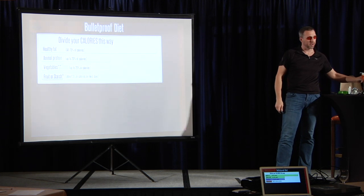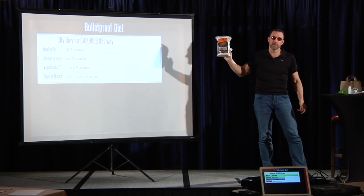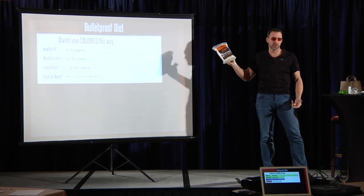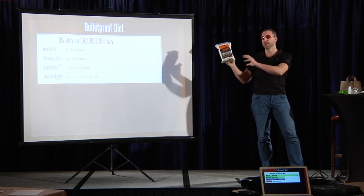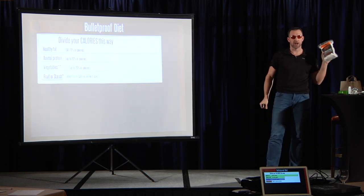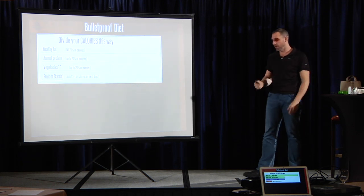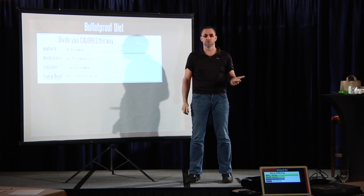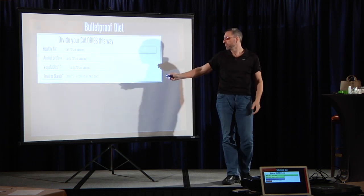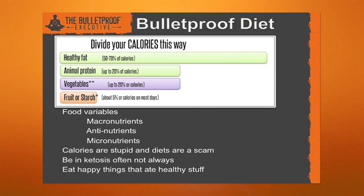Here's the basic tenets of the diet. Divide your calories like this: Tons of fat, 50 to 70 percent. Your animal protein, about 20 percent of calories. The idea that you're going to eat soy or wheat or that protein is protein is total BS. Vegetables, up to 20 percent of calories. Fruit or starch, up to 5 percent of calories.